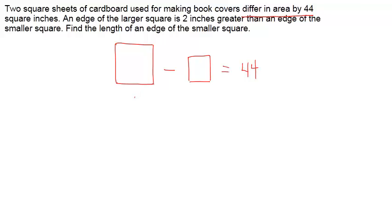They tell us that this edge here is two inches longer, greater, than the edge of the smaller square. This would imply that if you called the smaller square edge x, you'd have x plus 2 on your other edge, straight from that second sentence.